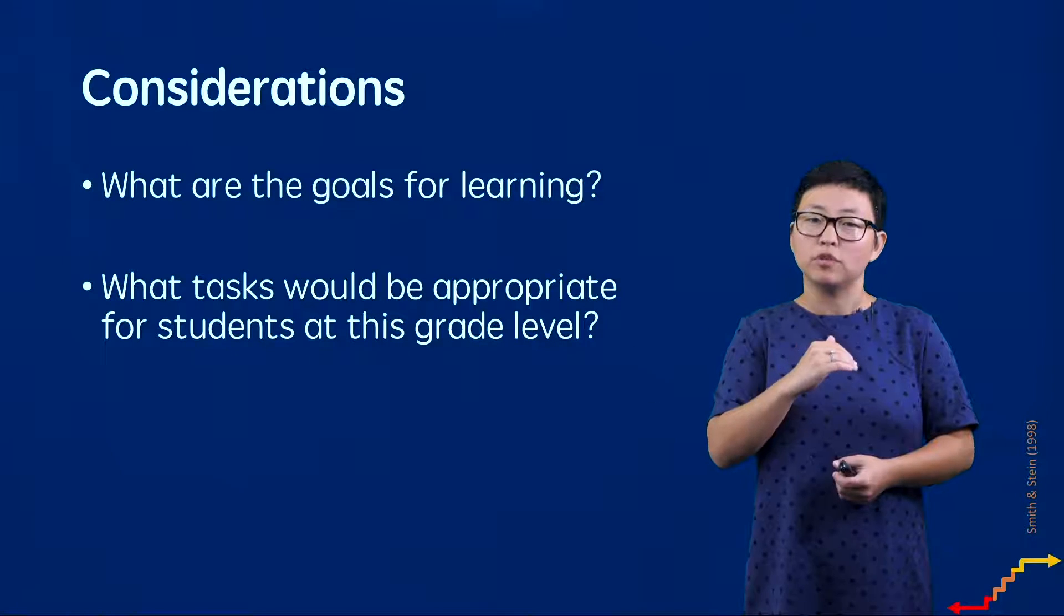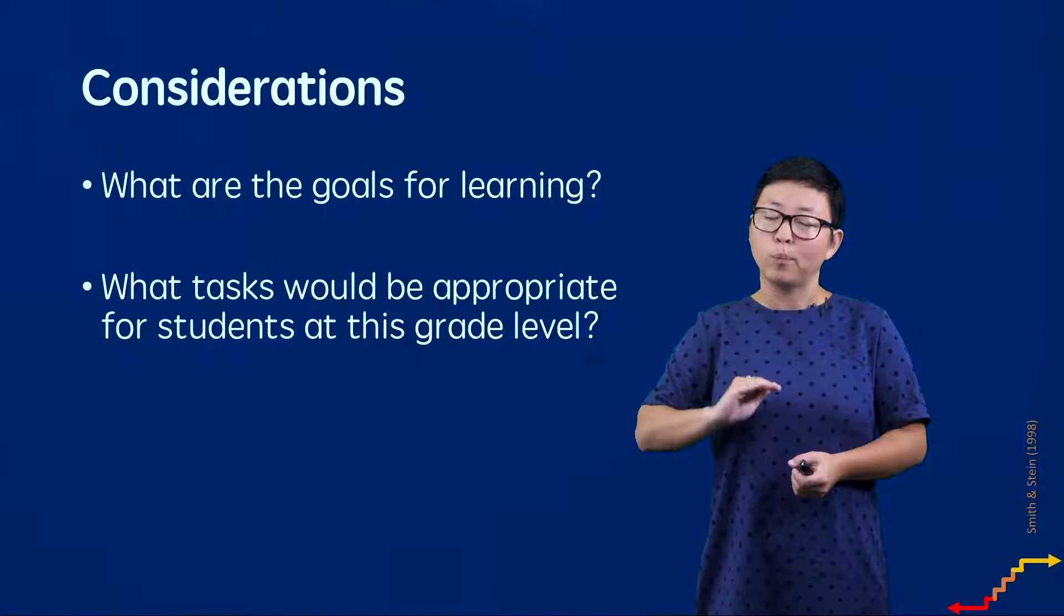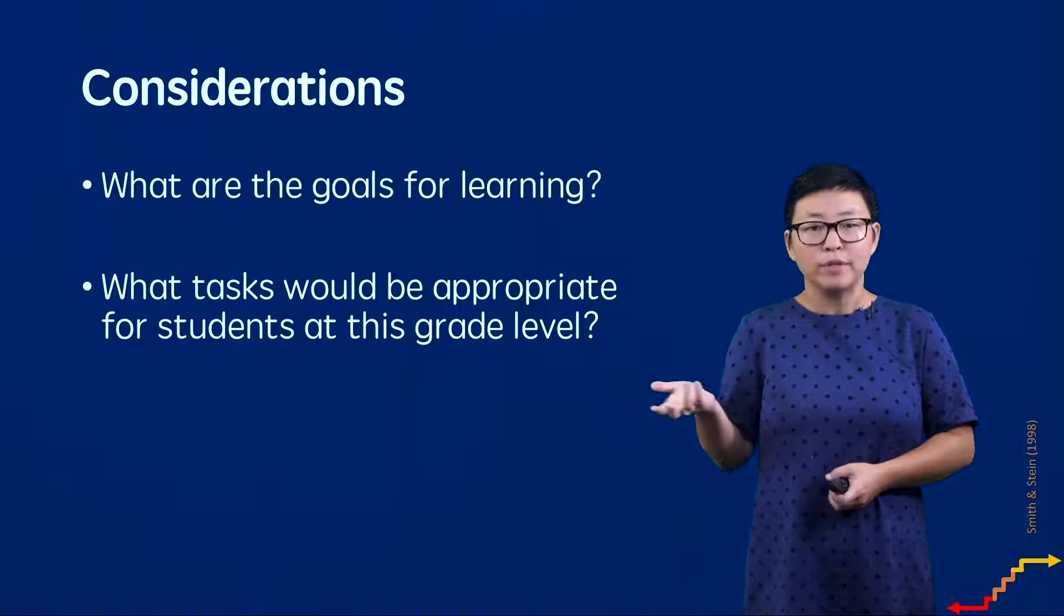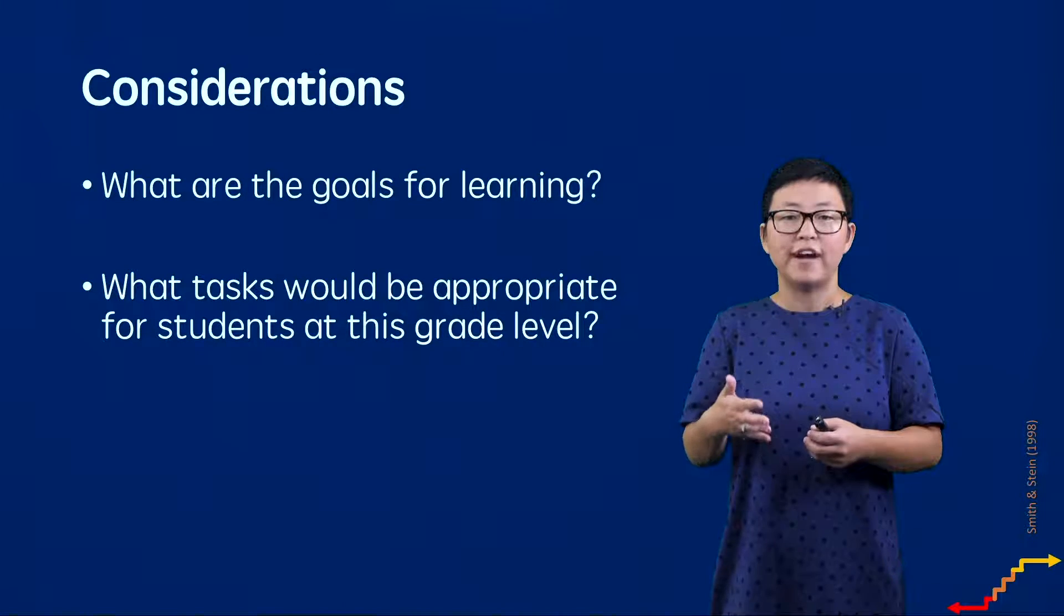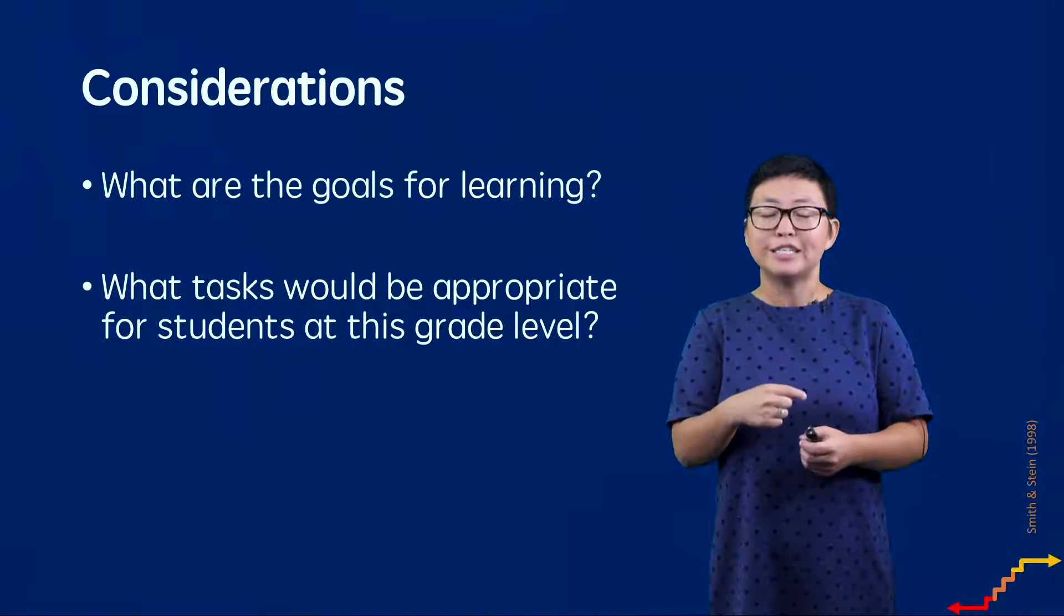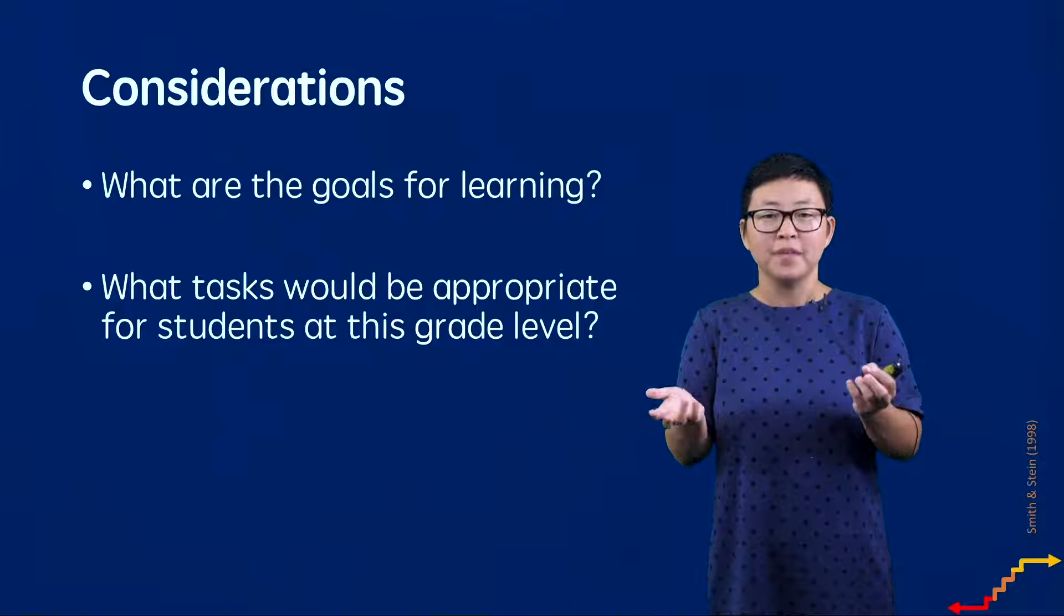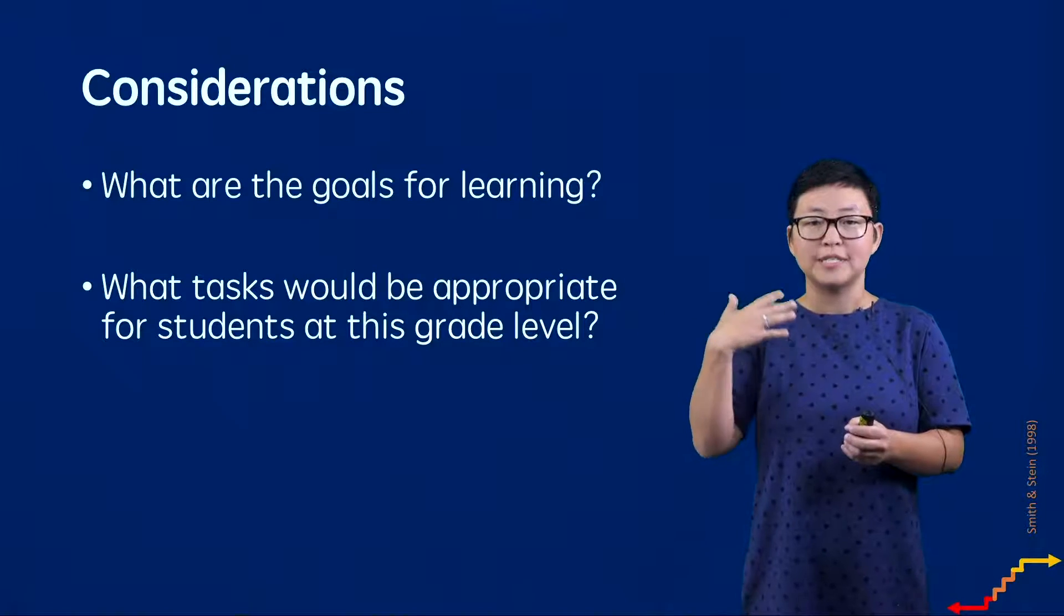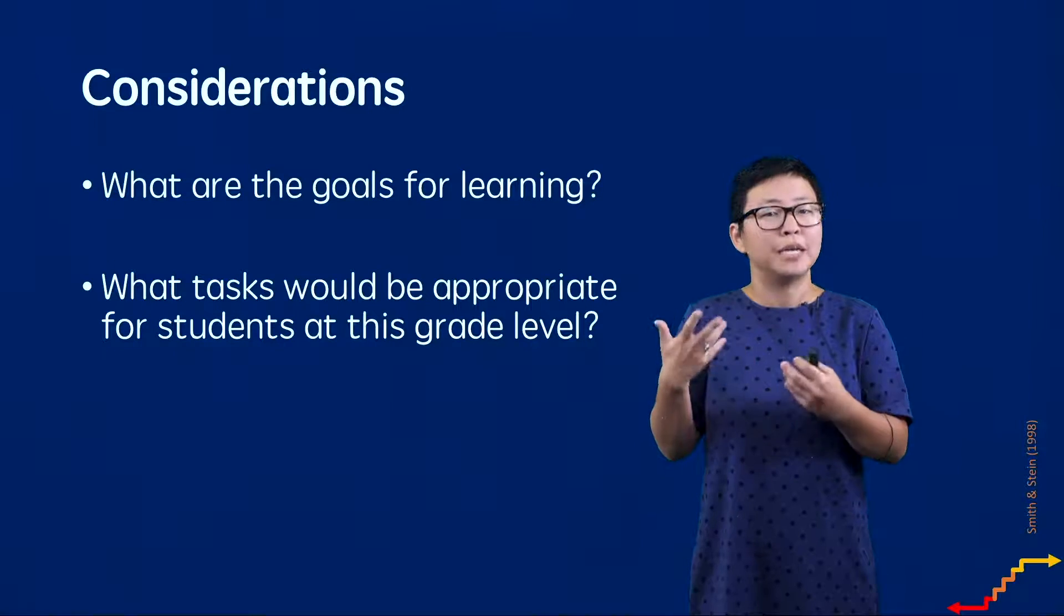The other thing to think about, and this comes from research from Smith and Stein, is you want to keep in mind what would be an appropriate task for a student considering their grade level, their age, and their previous experiences. This is less about their instructional level and more about finding a task that's appropriate. For example, if you were working with first grade students, we would discourage you from giving them a one-step equation presented in standard form because while students at that age can reason algebraically, that type of instruction would be really inappropriate to what we would have expected them to learn and have been exposed to at that point.